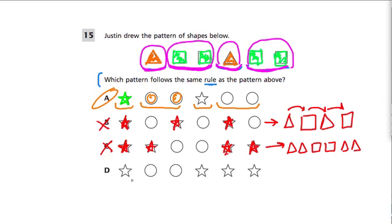Lastly, for D, I think this would make the most sense if we had a triangle, and two squares, and then three triangles. Something like that. Because here we have a star, and two circles, and then three stars. But that's not like the pattern we have. So I would cross out D as well.